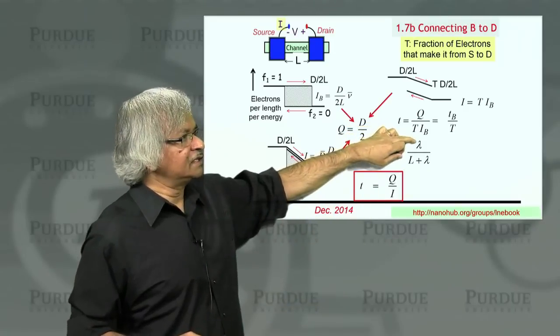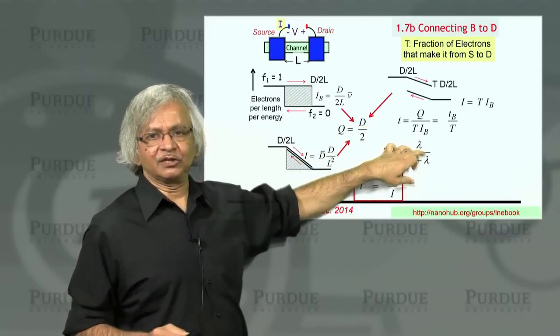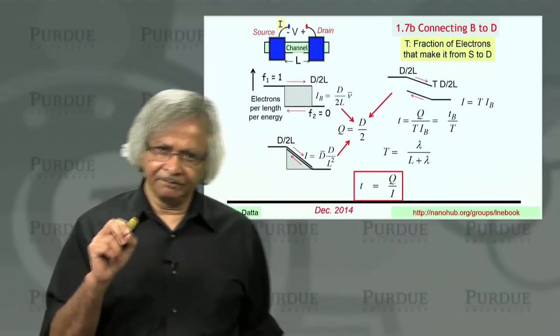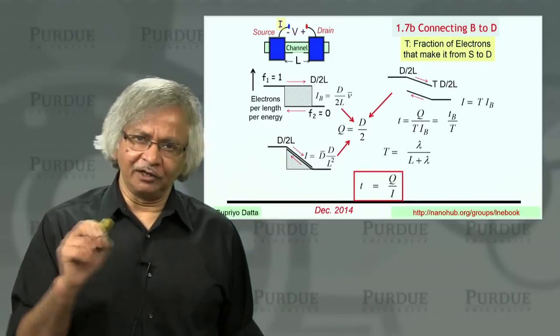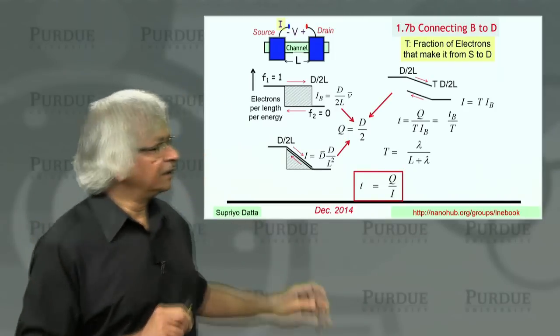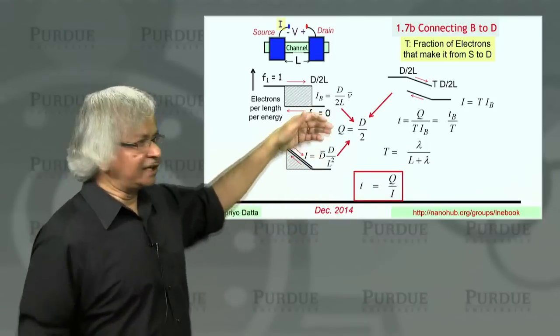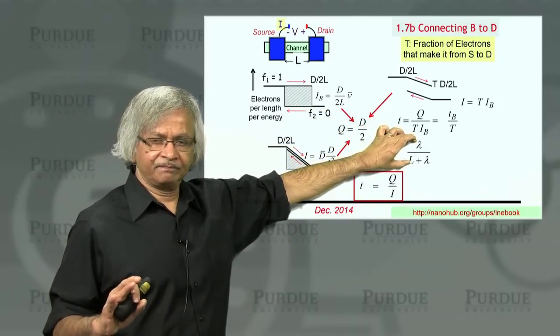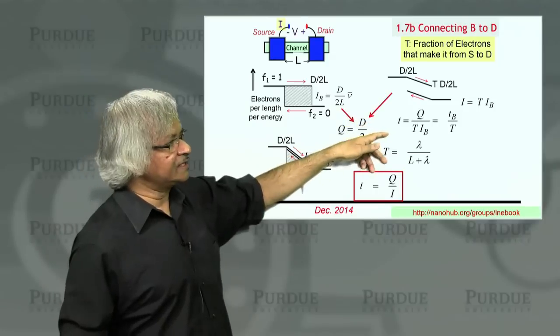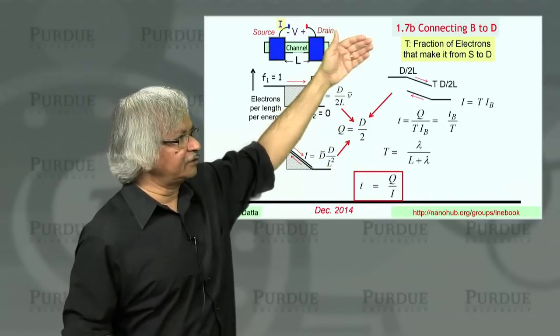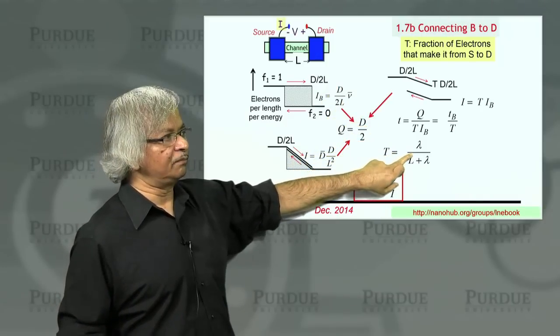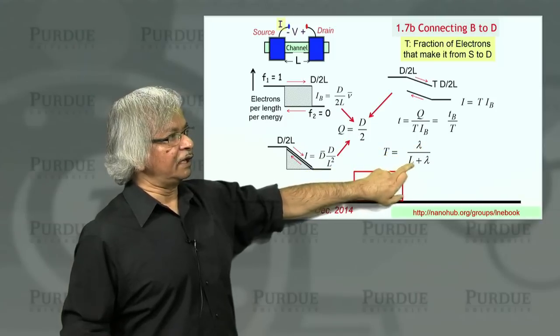Exactly how you define the mean free path can be different from one definition to the other, but in the next lecture, we'll see what the exact expression for this mean free path is. The bottom line is that this fraction of electrons that make it from source to drain can be written in this form, lambda over L plus lambda.